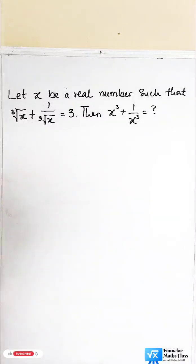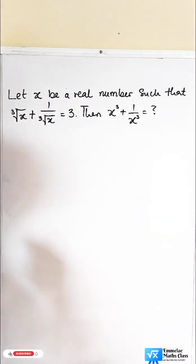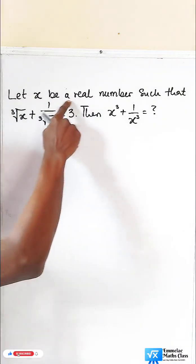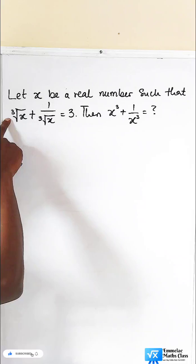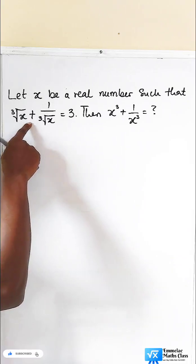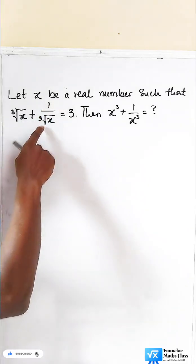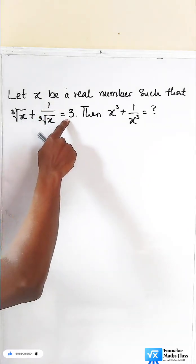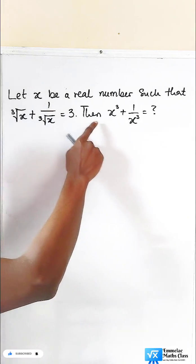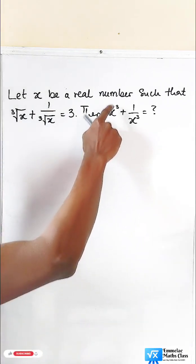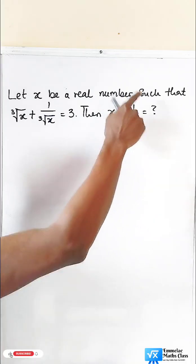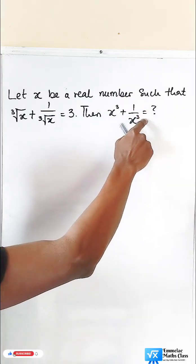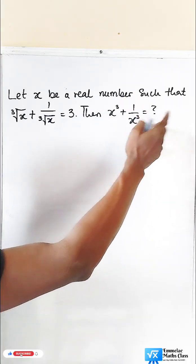Let us solve this math Olympiad question. It says: let x be a real number such that the cube root of (x + 1) all over the cube root of x equals 3. Then x cubed plus 1 all over x cubed equals what?